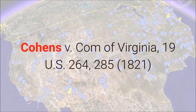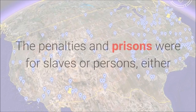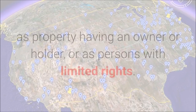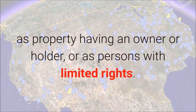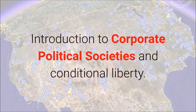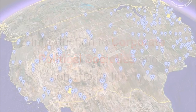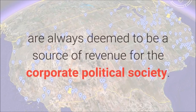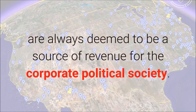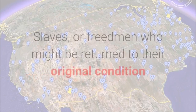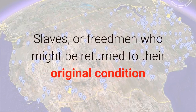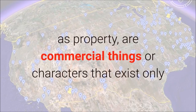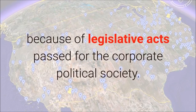And in case of inability of any such free negro or mulatto to pay and satisfy such penalty and costs thereon, to cause such free negro or mulatto to be confined to labor for such reasonable time, not exceeding six calendar months, for any one offense, as may be deemed equivalent to such penalty and costs, to provide for registering of births, deaths and marriages, to authorize night watches and patrols, and the taking up and confining by them, in the night time, of all suspected persons, to punish by law corporally any servant or slave guilty of a breach of any of their by-laws or ordinances, unless the owner or holder of such servant or slave shall pay the fine annexed to the offense. Cohens v. Commonwealth of Virginia, 19 U.S. 264, 285. The penalties and prisons were for slaves or persons, either as property having an owner or holder, or as persons with limited rights.